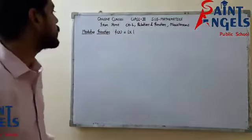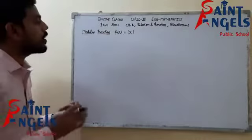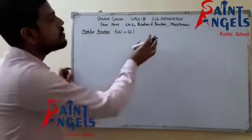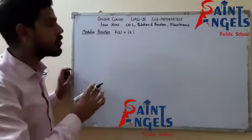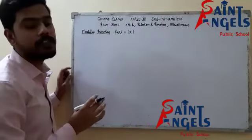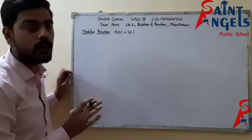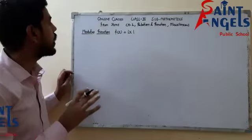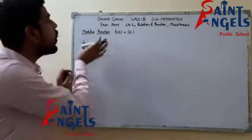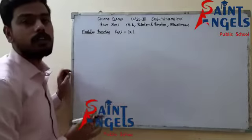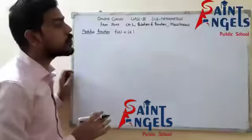So now students, in the exercise miscellaneous of chapter 2, question number 5 is related to the modulus function. First of all, we need to do clarity about what is the modulus function.